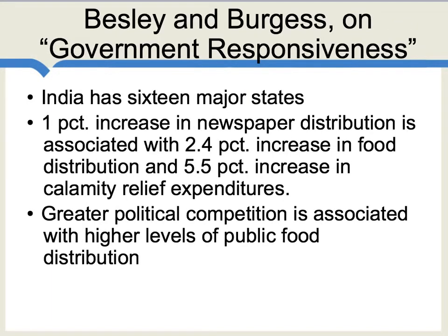Besley and Burgess have a famous paper on the political economy of government responsiveness, and they look at India, which has 16 major states. But across these states, there are different degrees of media competition, newspaper distribution, and also political competition. What Besley and Burgess find is that when there are lots of newspapers, media markets are very competitive, and there's a lot of political competition, there tend to be higher levels of public food distribution, and it's harder for people to go hungry.